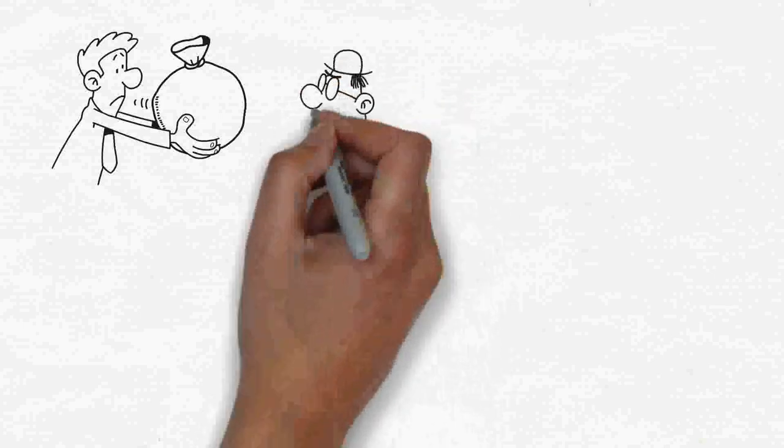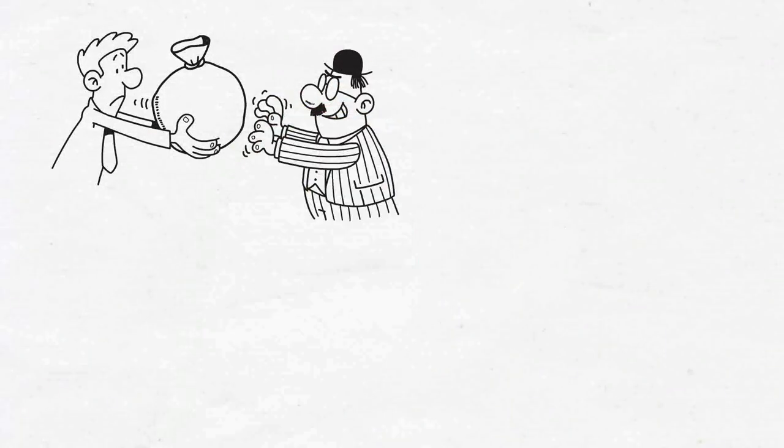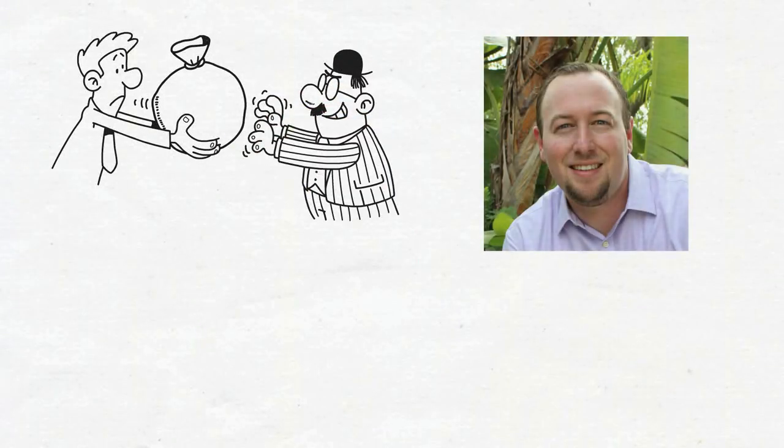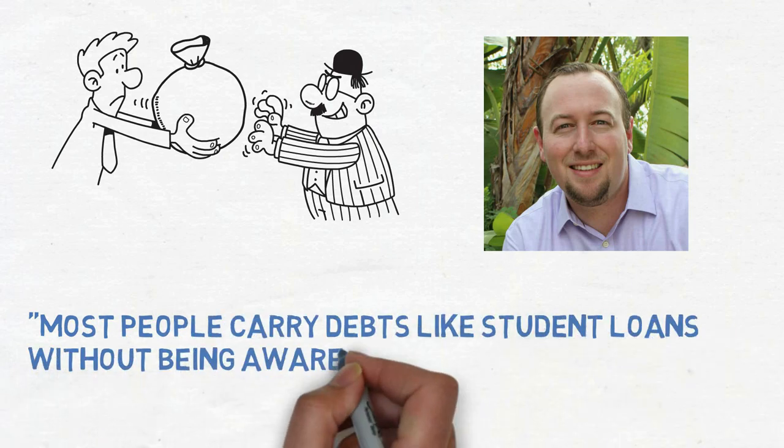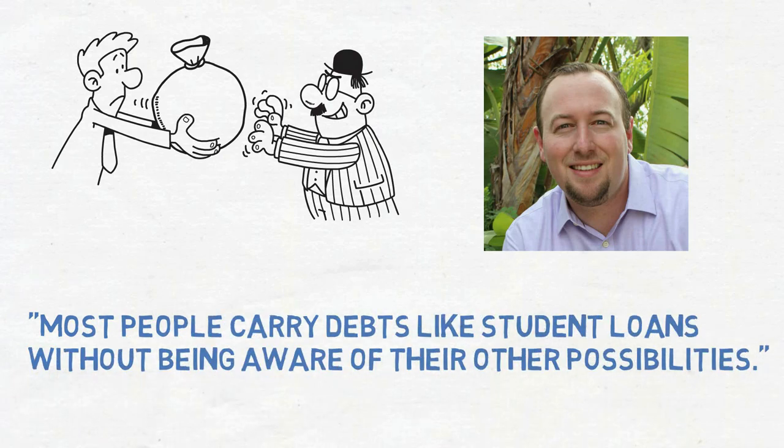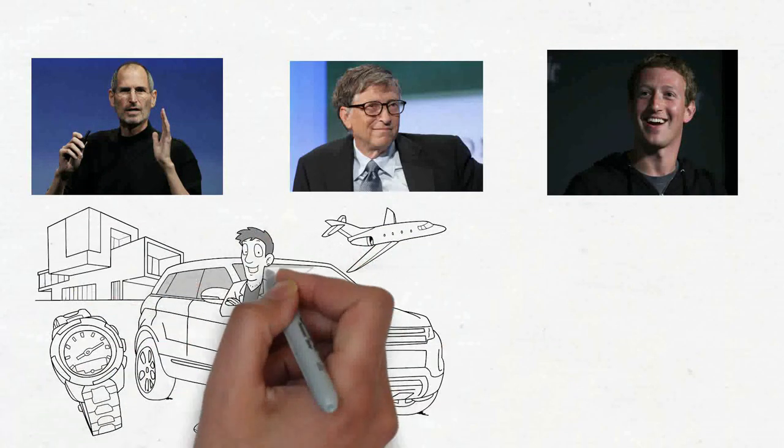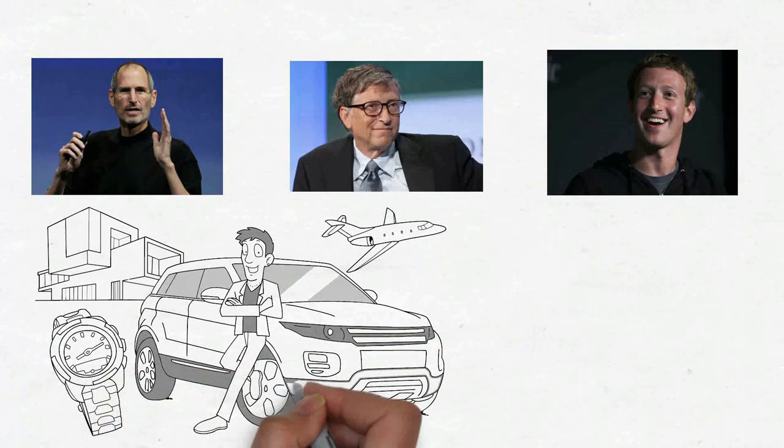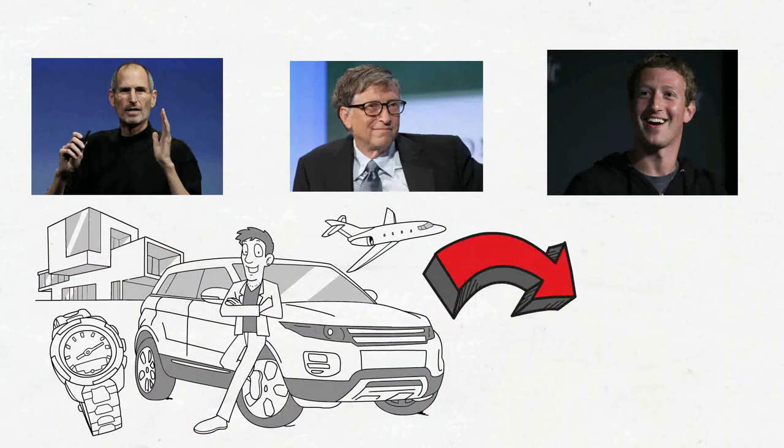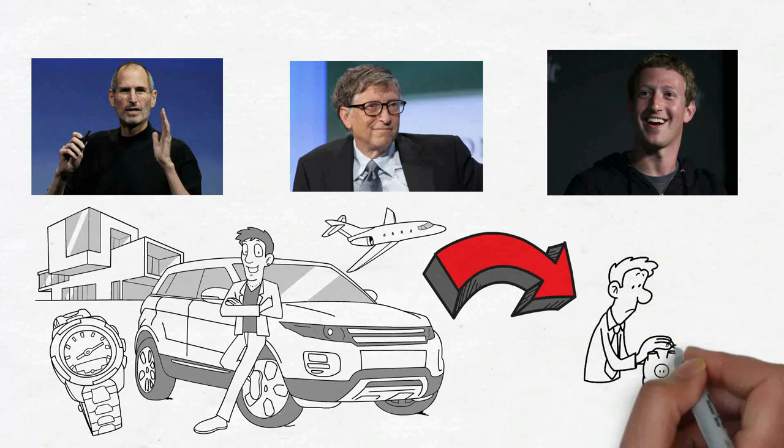They invest in something that others are doing. Robert Farrington, the creator of The College Investor, notes that most people carry debts like student loans without being aware of their other possibilities. Let me now describe the activities of the rich. Look at billionaire college dropouts like Steve Jobs, Mark Zuckerberg, and Bill Gates. Nowadays, people enjoy comparing their social status to others, which leads them to follow the trend. They'll have to deal with being broke in the future because of this.